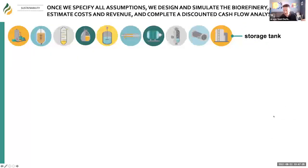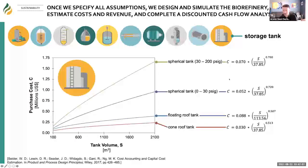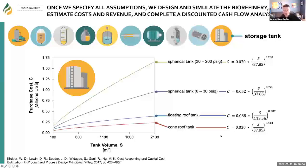Once we identify all the units and technologies in the biorefinery, we cost all of them — estimating costs, environmental impacts, energy consumption, and so on. For example, for a storage tank, there are existing relationships we can leverage. The graph shows volume on the x-axis and purchase cost in millions on the y-axis. Depending on the compounds being stored, the pressure, or whether it's corrosive, we have cost expressions to estimate cost as a function of unit size. We have the same for every unit across the plant — centrifuges, pumps, distillation columns, and so on.